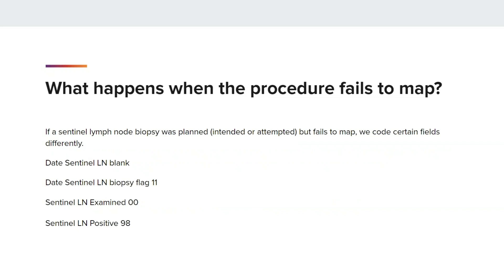But what happens when the procedure fails to map? If a Sentinel Lymph Node Biopsy was planned, intended, or attempted but fails to map, the date of the Sentinel Lymph Node Biopsy is blank and the date of the Sentinel Lymph Node Biopsy flag is 11. The Sentinel Lymph Node examined and Sentinel Lymph Node positive are coded to 00 and 98 due to the unfinished procedure.